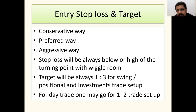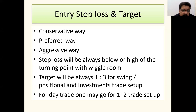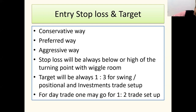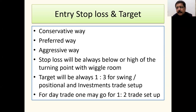There are three ways to buy: conservative, preferred, and aggressive. Stop loss will always be below or above the turning point with wiggle room. The target will always be 1:2 or 1:3 for swing, positional, and investment trade setups. For day trade you may go for 1:2 setup but you need expertise. I normally don't encourage day trading, but since the pandemic has given people more time and the need for more income, sitting at home we can make money with this expertise.